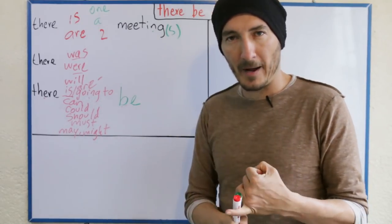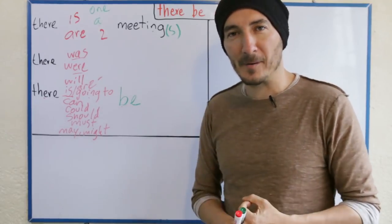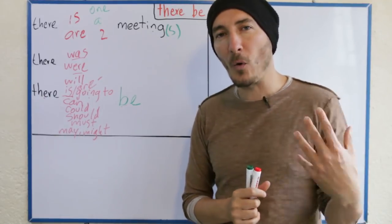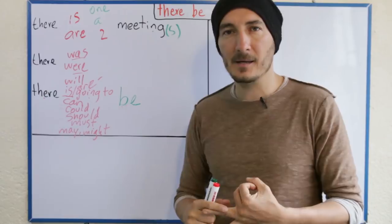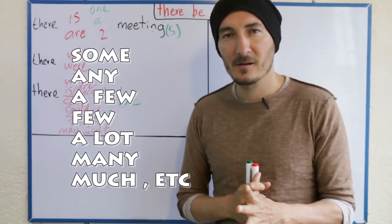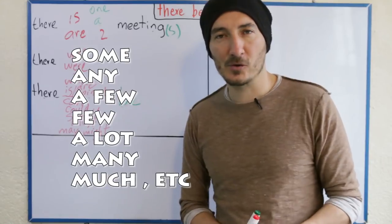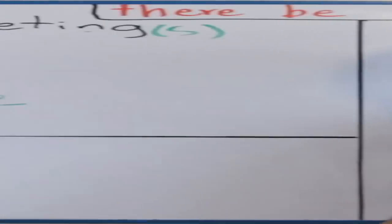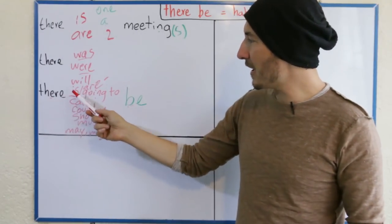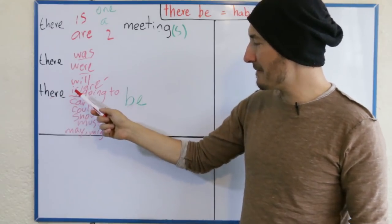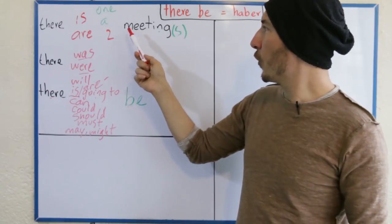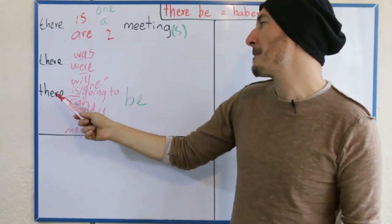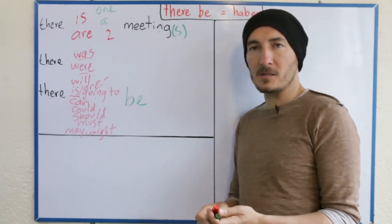No me voy a quedar solamente con los tiempos básicos — voy a pasar también a la forma en perfecto, en negación y en pregunta. Necesitan saberlo todo. Voy a complementar este video con uno de quantifiers, donde va a ir el some, any, a few, many, much, porque sé que eso también es algo que nos cuesta mucho trabajo. Ese va a ser el próximo video. Pero antes de pasar a los siguientes tiempos: 'there is going to be' significa 'va a haber' — there is going to be a meeting. Y 'there are going to be two meetings' significa 'va a haber dos reuniones'.